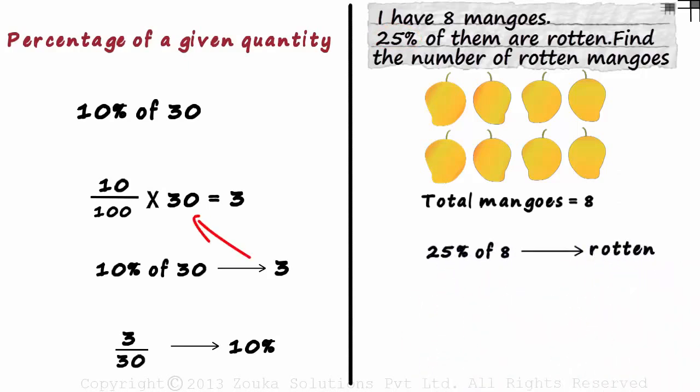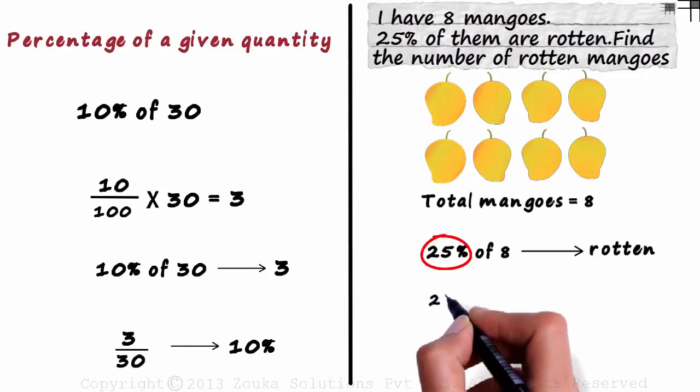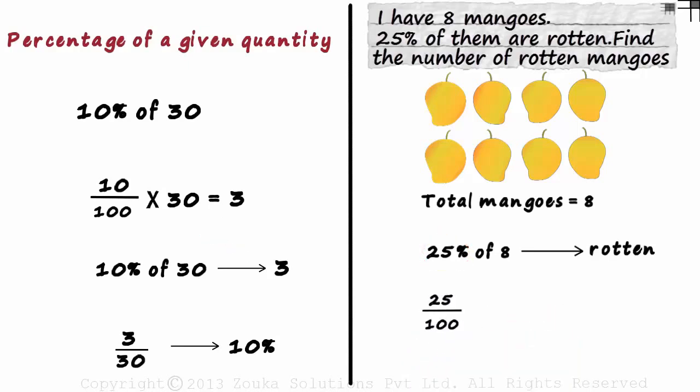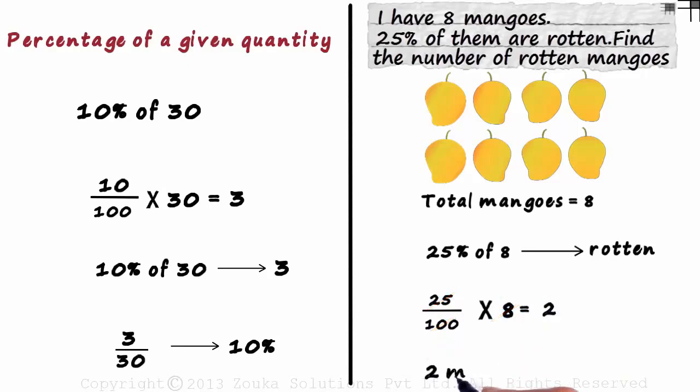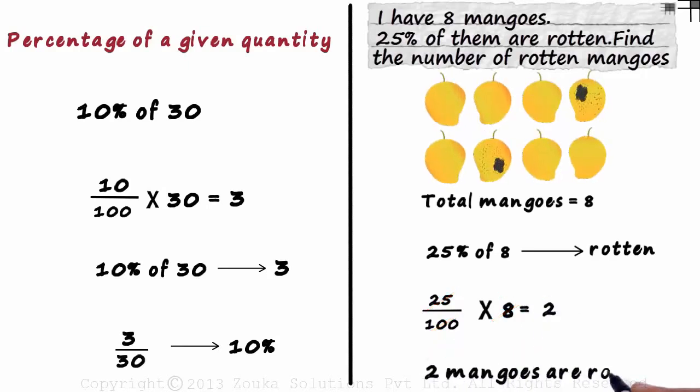We use the same technique which we used here. We write 25% as 25 by 100. Of as multiplied by and 8 as is. So all we have to do is find 25 by 100 multiplied by 8. 25 times 4 is 100. And 4 times 2 is 8. So this equals 2. So we can say that 2 mangoes out of the 8 are rotten.